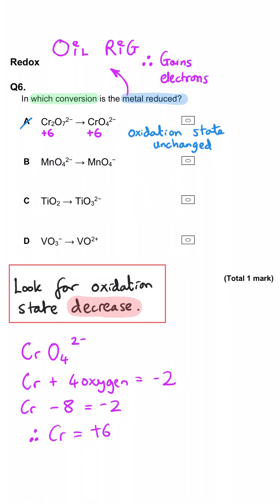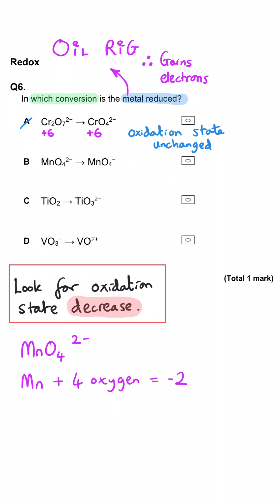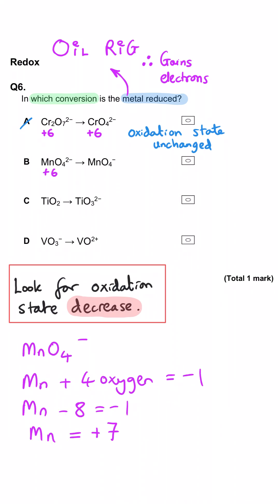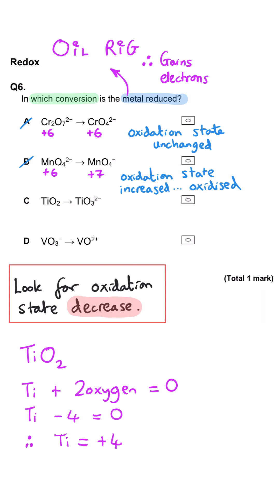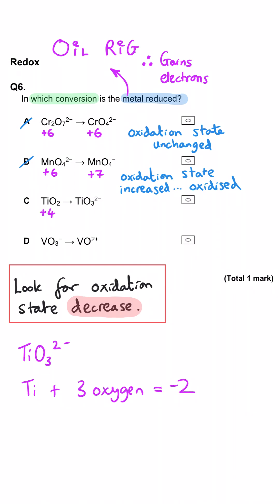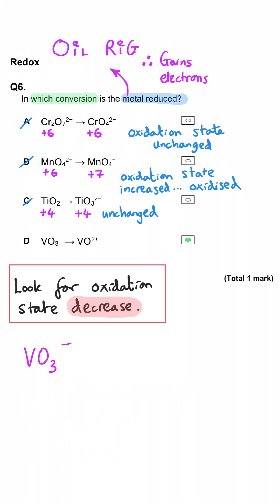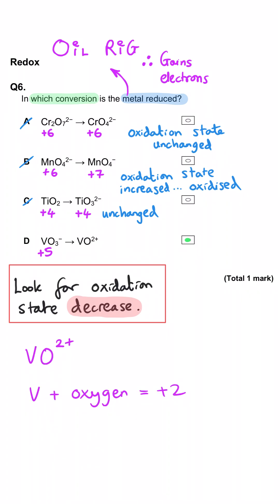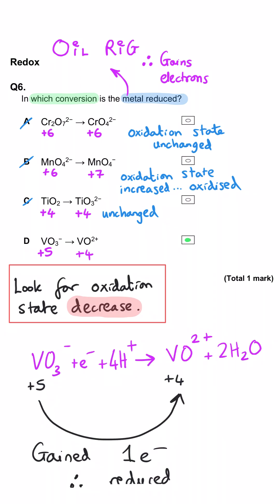In B, MnO4 2− has manganese at plus 6, but in MnO4− it's plus 7 — so this has changed, but it's been oxidized. In TiO2, titanium is plus 4, and in TiO3 2− it's still plus 4, so no change. So D must be the correct answer: vanadium starts at plus 5, ends at plus 4, so it has gained one electron and been reduced.